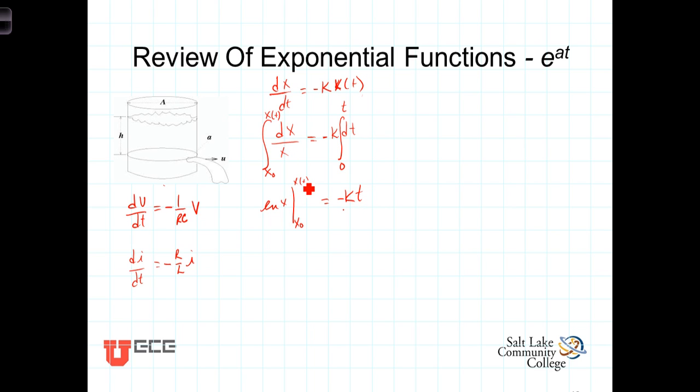Now again, we're solving for this function x of t, so evaluating this at the upper and lower limits, we have then the natural log of x of t minus the natural log of the initial value of x is equal to negative kt.